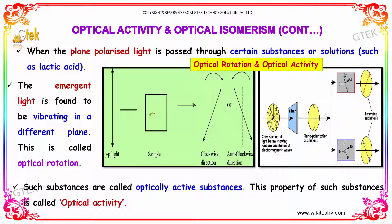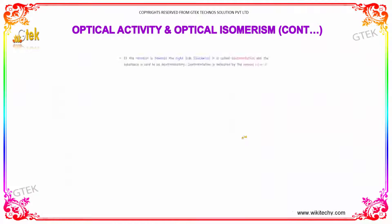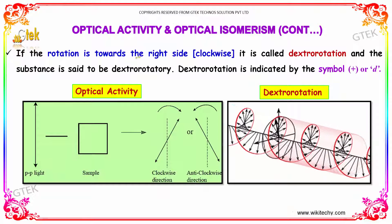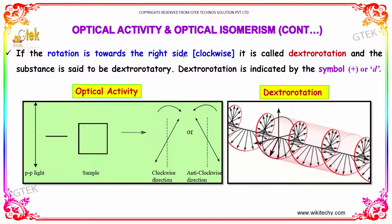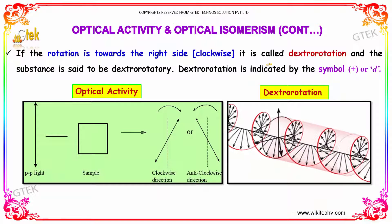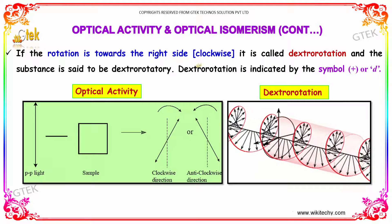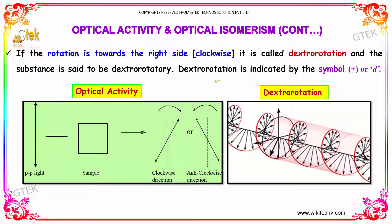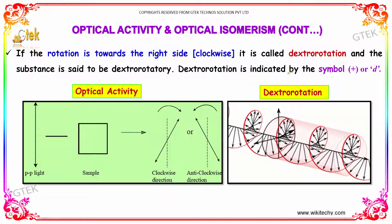When plane polarized light is passed through a sample, it either rotates in the clockwise direction or in the anticlockwise direction. If the rotation is towards the right side, that is in the clockwise direction, it is called dextrorotation, and the substance is said to be dextrorotatory. Dextrorotation is indicated by the symbol plus or D.